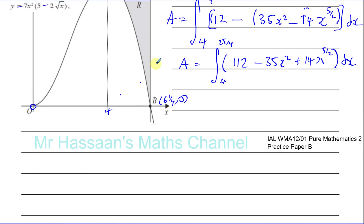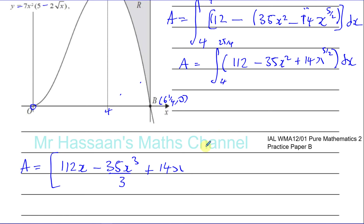Integrating: 112 becomes 112x; 35x squared integrates to 35x cubed over 3; and 14x to the power of 5 over 2 integrates to 14x to the power of 7 over 2 divided by 7 over 2. Adding 1 to 5 over 2 gives 7 over 2. Dividing by 7 over 2 is the same as multiplying by 2 over 7. The 14 and 2 cancel the 7, leaving a coefficient of 4. So we get 4x to the power of 7 over 2, evaluated between 4 and 25 over 4.